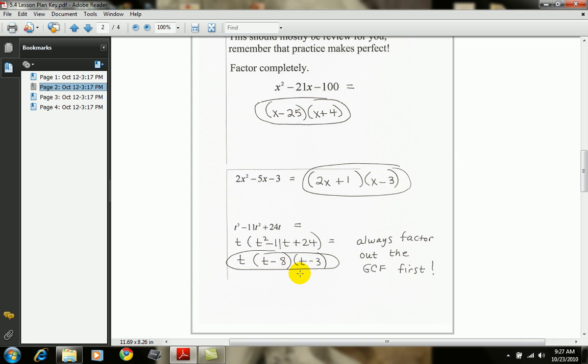Now one hint here I want to give you. Whenever the last sign in a trinomial is positive, the two signs here are always going to be the same as the middle. Whenever this is positive, these two signs are the same as the middle, so they're both going to be negative.